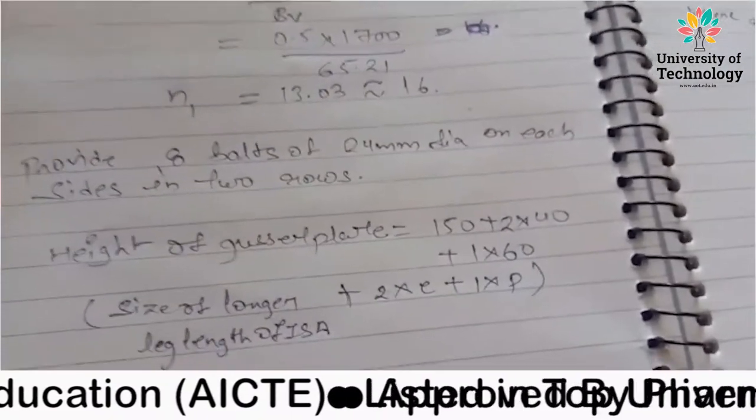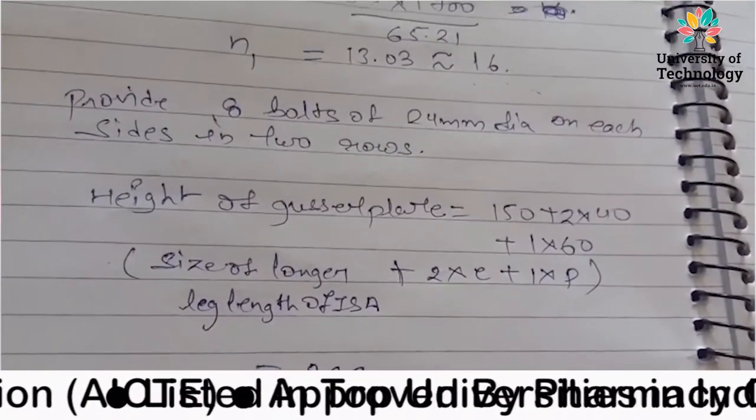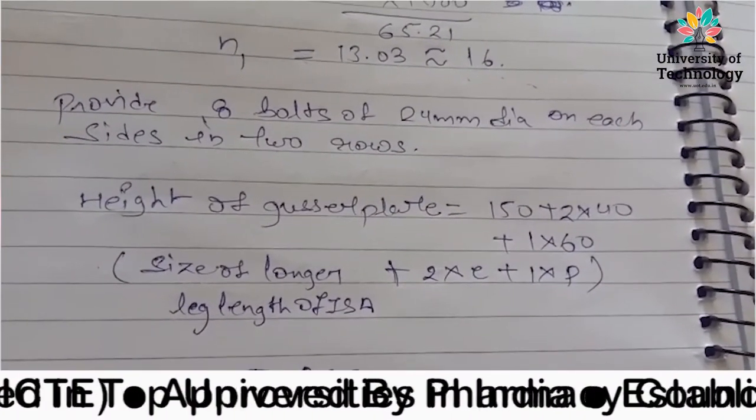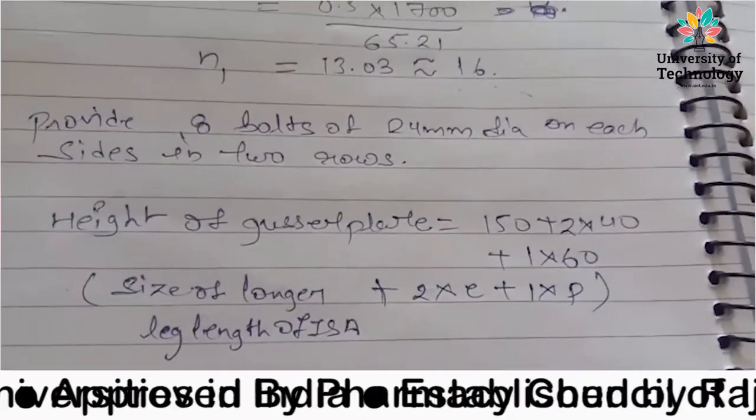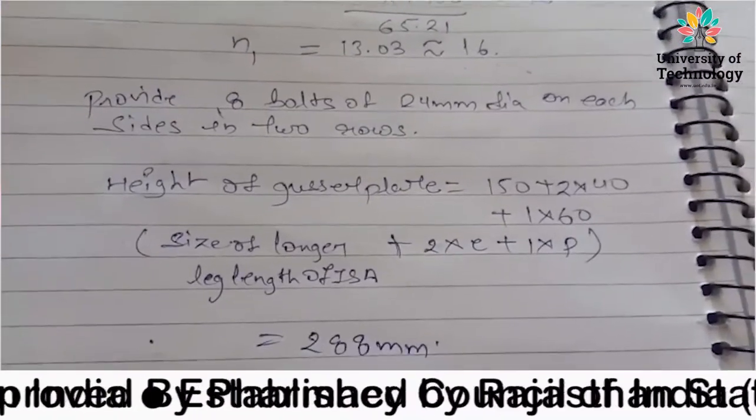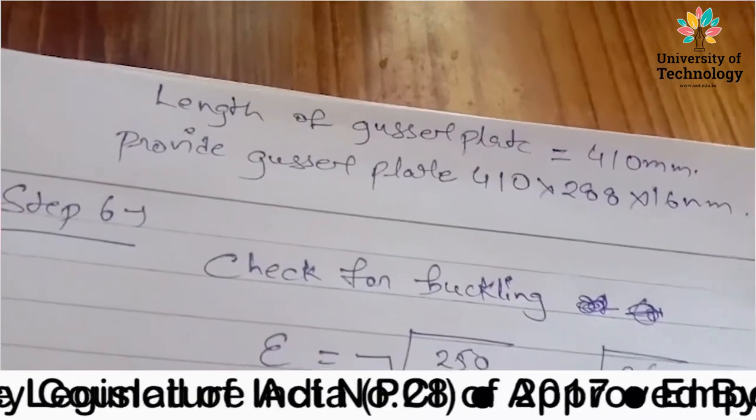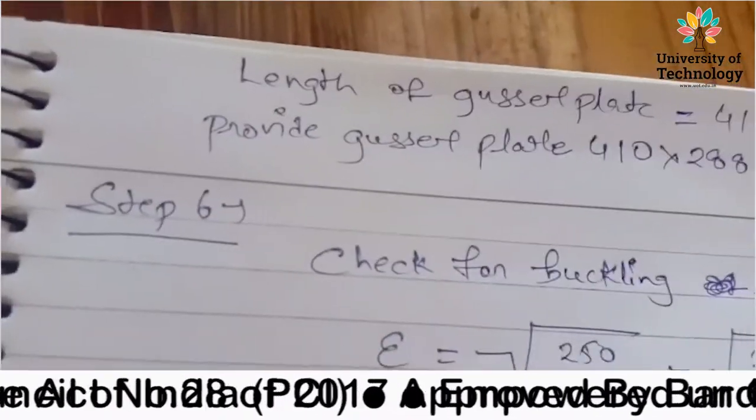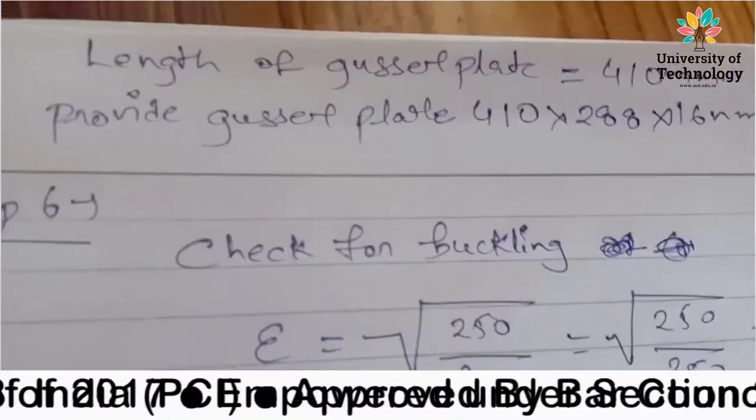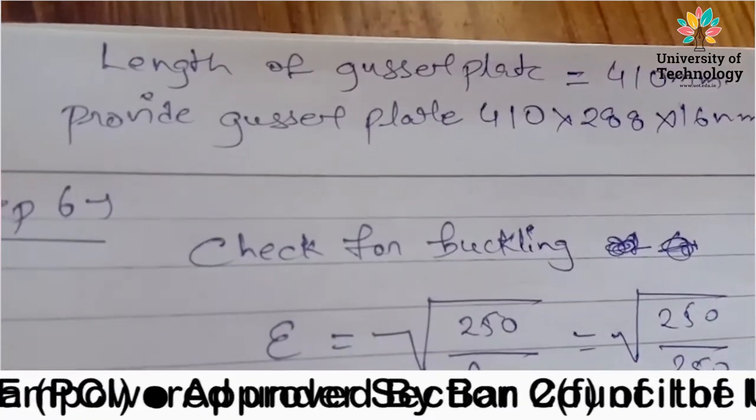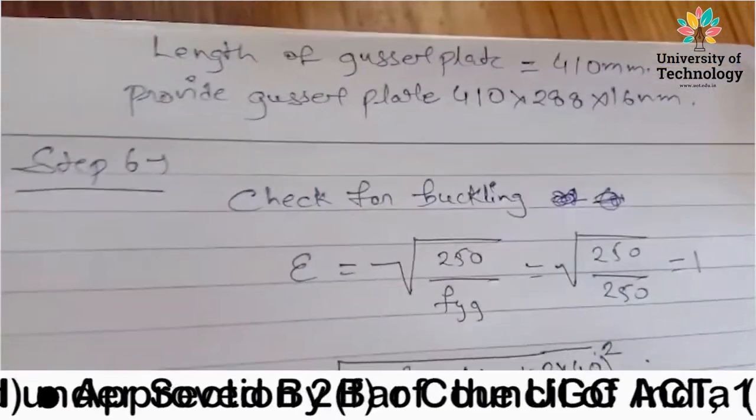Height of gusset plate: 150 plus 2 into 40 plus 1 into 60. I have a formula clearly defined. This is height of gusset plate. Next, length of gusset plate will be the same as length of base plate. Provide gusset plate of size 410 x 288 x 16 mm.